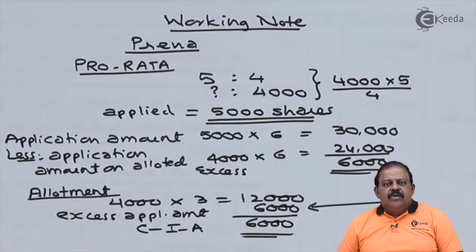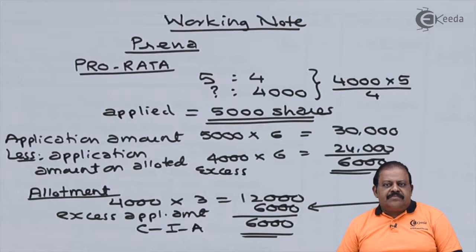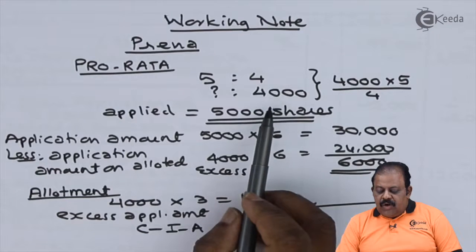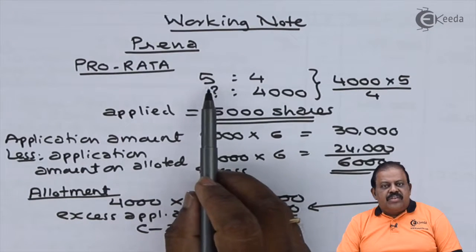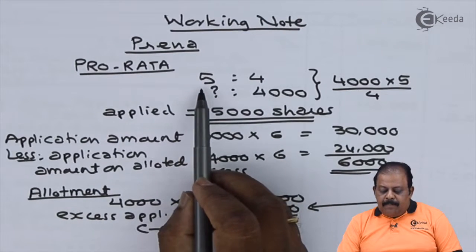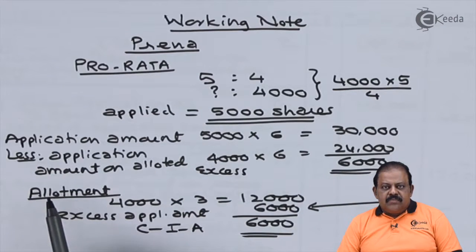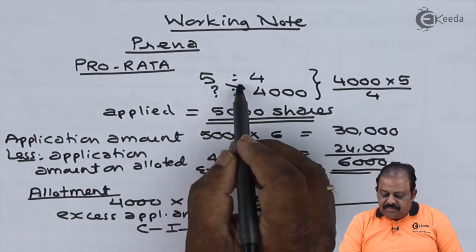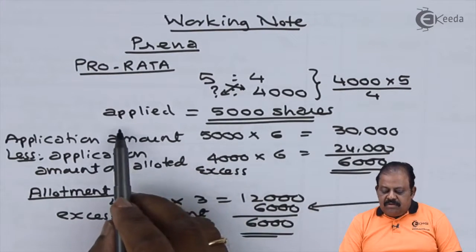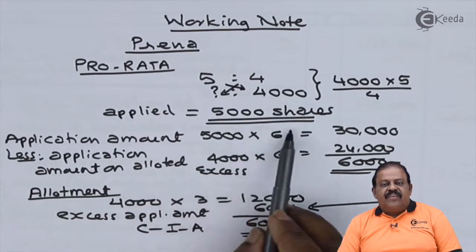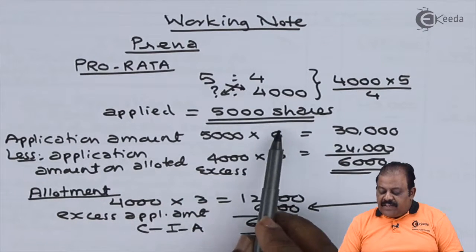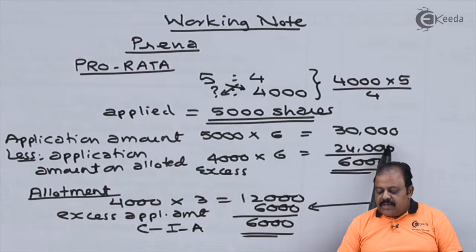Prerana, to whom 4,000 shares were allotted, defaulted at allotment. We calculate how many shares she applied for: with pro-rata ratio 5:4, if 4,000 shares are allotted, she applied for 5,000 shares (cross multiplication). Application amount on her 5,000 shares at ₹6 = ₹30,000.